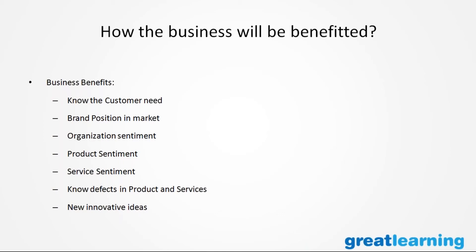Customer complaints trigger the R&D department to analyze the issues. For example, the Samsung Galaxy S4 or S6 was known to have a battery problem, and Samsung replaced the batteries. They initially thought it was a general mobile problem, but later identified it as a battery issue and rectified it. This came to light through customer complaints. Text analytics on customer feedback can also surface new innovative ideas for product development.